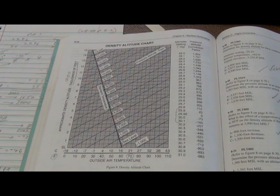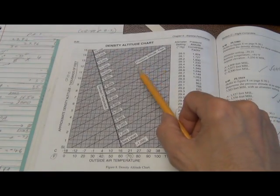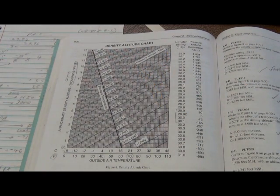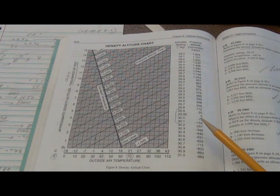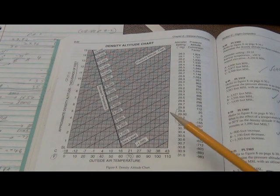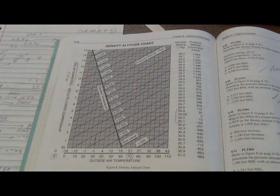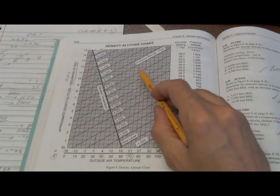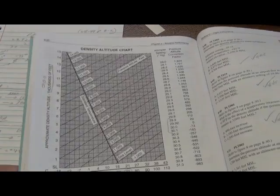Not every question in the density altitude section of the test will give you the pressure altitude. You'll have to find the pressure altitude on your own. And that's what this next question in the study guide makes us do, is it will give us information so that we can find the pressure altitude. Right now, we're not looking for density altitude. We're just going to look for the pressure altitude in feet. And here's how you do it.